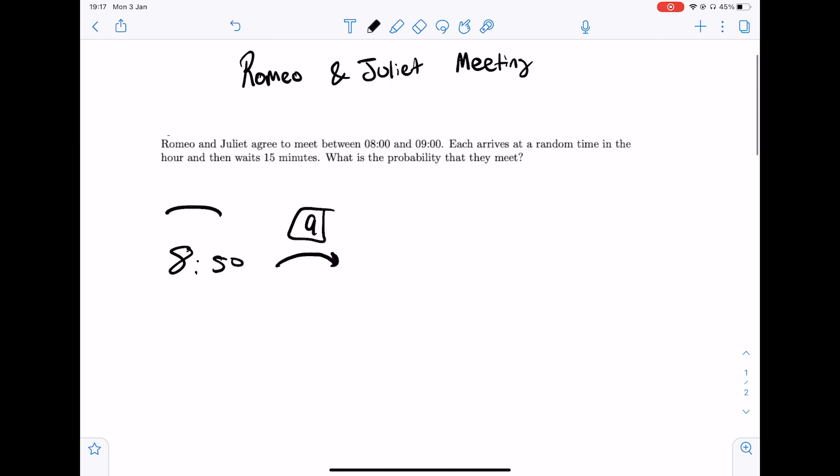So it needs to go before, and alternatively if Romeo gets there at 8:10, obviously 15 minutes prior will be 7:55. So it will be before the 8am.